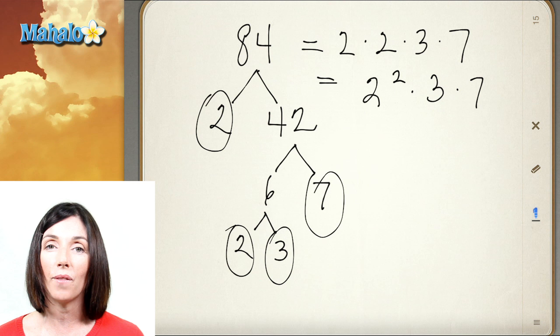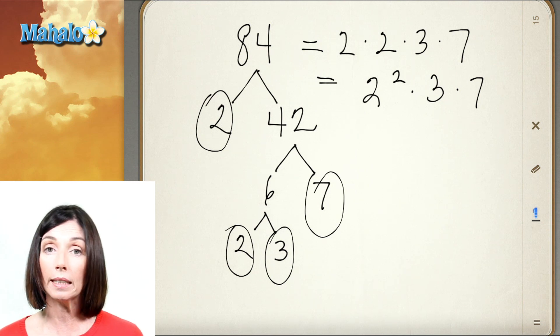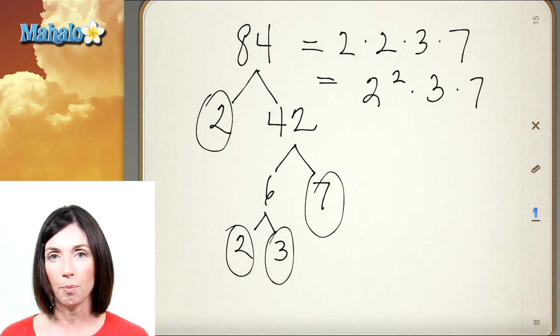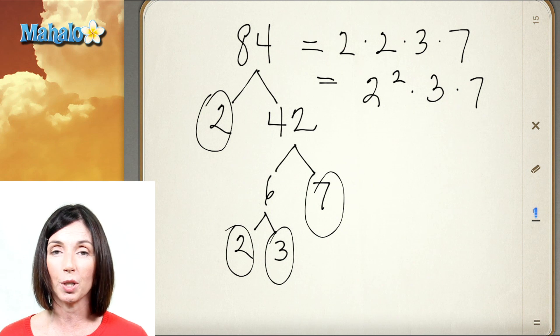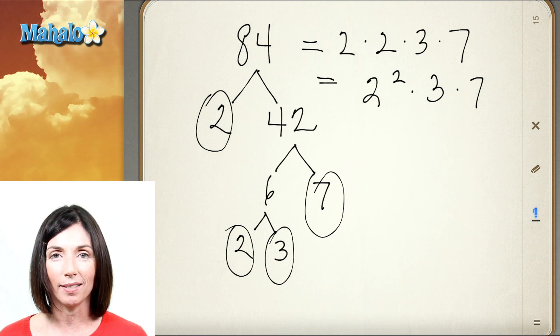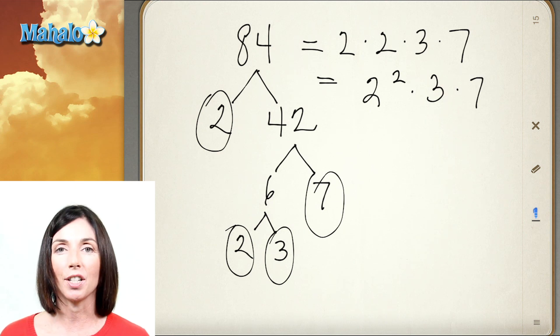Now doing prime factorizations are important for finding the greatest common factor or least common multiple of two numbers. Now this idea that any composite number can be factored uniquely into prime numbers might sound simple, but it's actually very important. That is the fundamental theorem of arithmetic. And that's prime factorization.